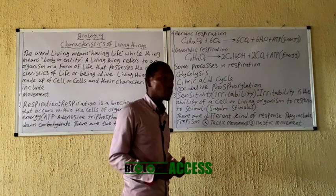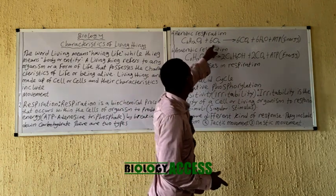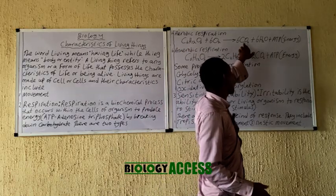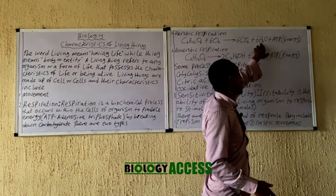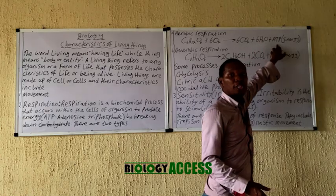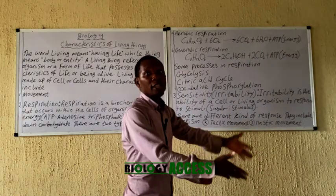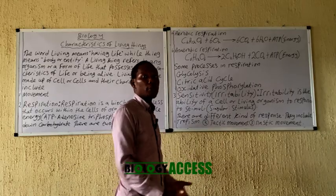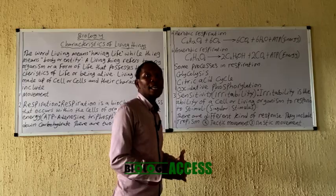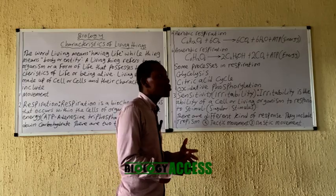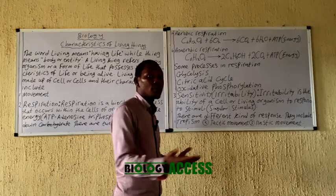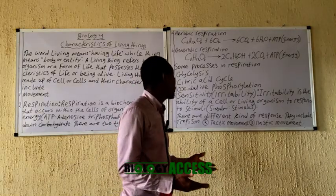In aerobic respiration, oxygen is used to break down carbohydrates, and the waste products are carbon dioxide and water, while energy in the form of ATP is given to the body. This energy can be used for various forms — it can produce heat, electrical impulses, and various forms of responses.